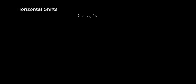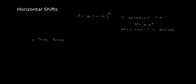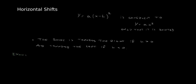Let's see what we can do to move a function left or right. These are called horizontal shifts. We're going to study a specific type of quadratic function: y equals a times x minus h, squared. This function is congruent to y equals ax squared, only shifted h units to the side. This shift is towards the right if h is greater than zero, and towards the left if h is smaller than zero.